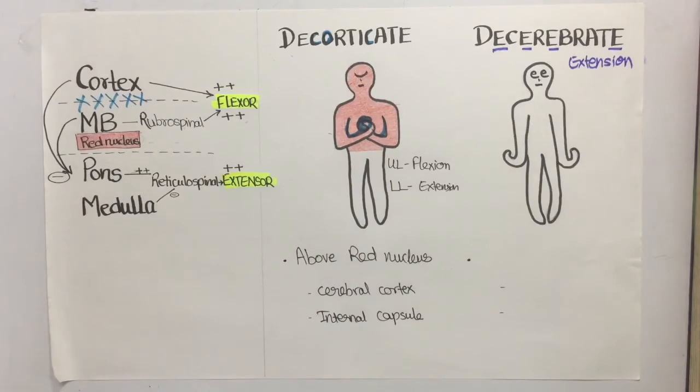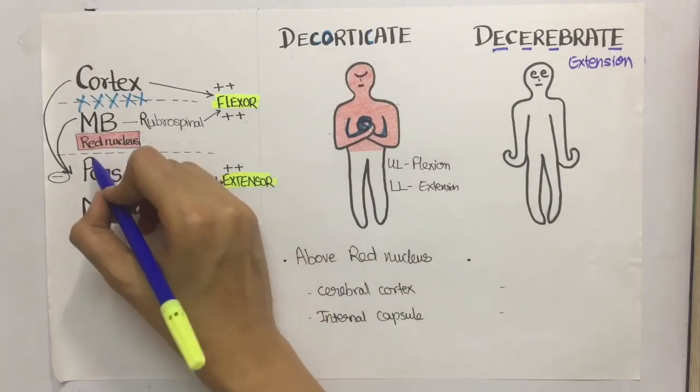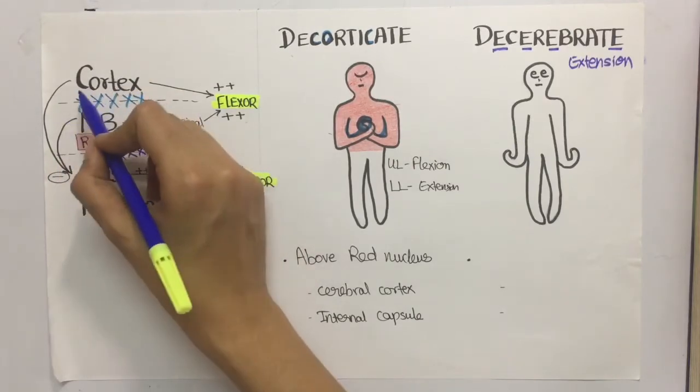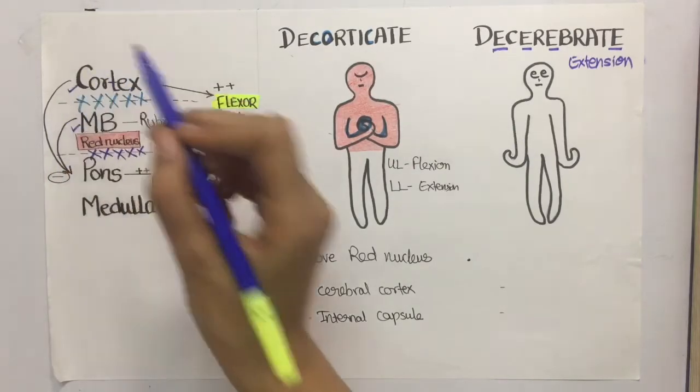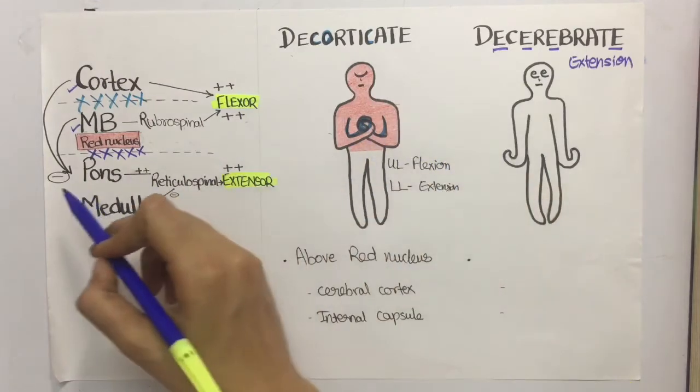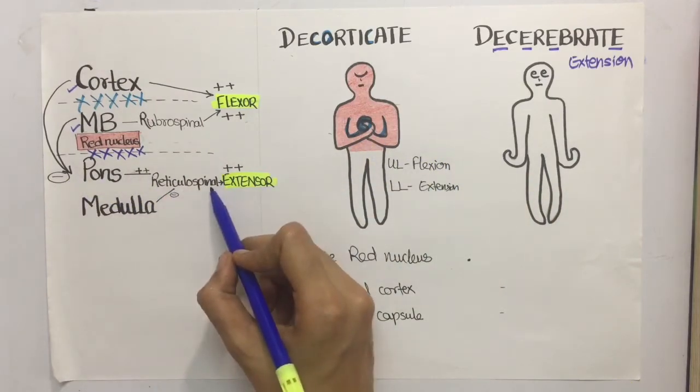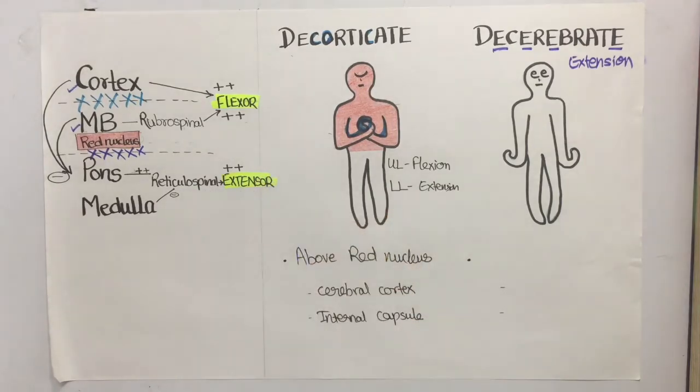Here the lesion is below the level of red nucleus, that means at this level, so both the cortex and midbrain fibers are inactive. This causes a loss of inhibition to the reticulospinal fibers and these reticulospinal fibers are thus over-activated causing extension.